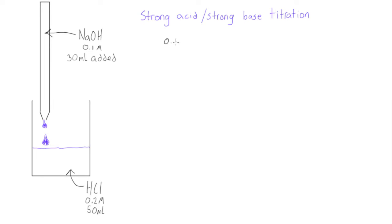So we can start by going 0.1 molar times, for the NaOH, 0.03 liters. And this is going to give us 0.003 moles. Okay, perfect. And that was NaOH.